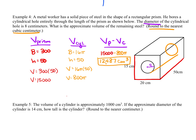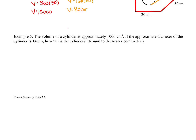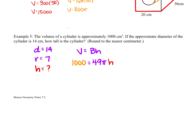The last question says the volume of a cylinder is approximately 1,000 centimeters cubed. If the approximate diameter is 14 centimeters, how tall is the cylinder? If the diameter is 14, the radius is 7. Writing out the volume formula — area of the base times the height — the volume is approximately 1,000, and the area of the base is pi r squared, so 49π. I need to figure out the height.